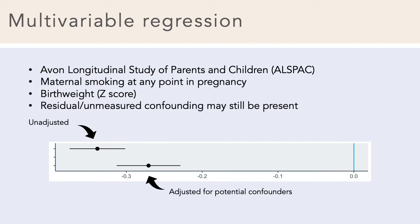Adjusting for potential confounders attenuates the effect estimate towards the null slightly, but it still looks like there is a strong effect of maternal smoking on offspring birth weight. However, this doesn't account for unmeasured confounding — it's very difficult to measure all factors associated with both the exposure and the outcome, and there may be residual confounding even after adjustment if confounders are measured with error. We may also have modelled some confounders incorrectly, so there may be some residual bias in the multivariable regression estimate.